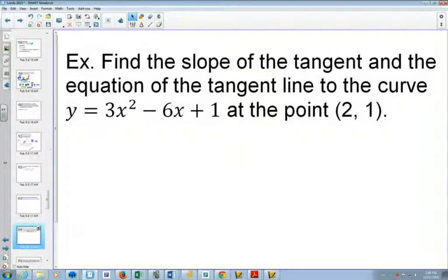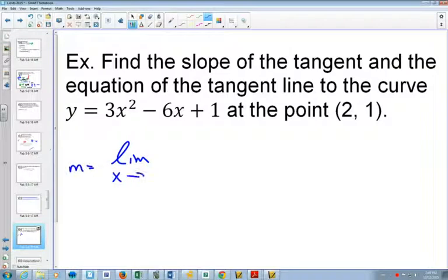So we want to find the slope of the tangent and the equation of the tangent line for y equals 3x squared minus 6x plus 1 at the point 2 comma 1. So we've got our equation. We want the limit. Our slope is equal to the limit as x approaches. And here, we're approaching 2.